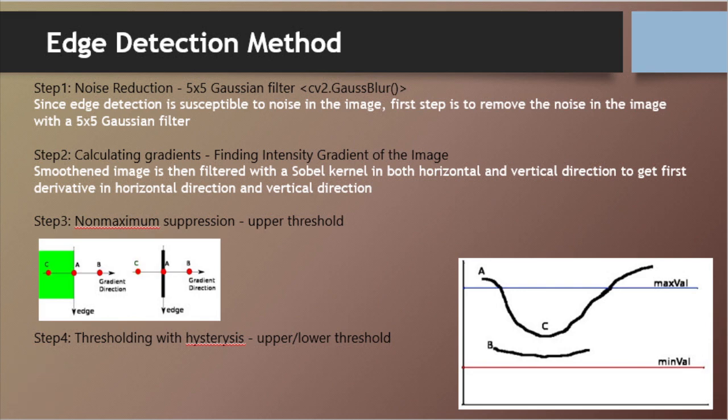Step 3: non-maximum suppression — you can see details in the picture. Point A is on the edge in the vertical direction. The gradient direction is normal to the edge. Points B and C are in the gradient directions. Point A is checked with points B and C to see if it forms a local maximum. If so, it is considered for the next stage; otherwise, it is suppressed and put to zero.